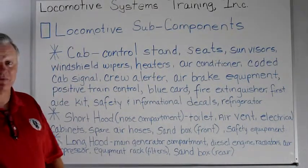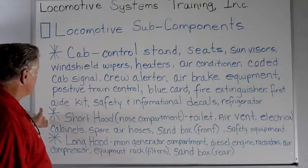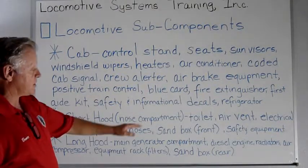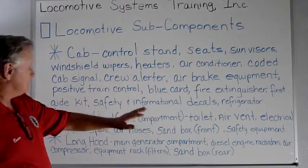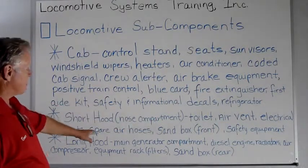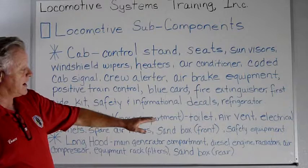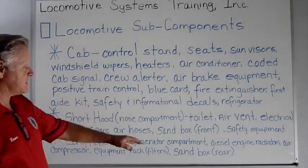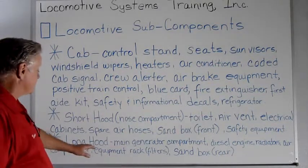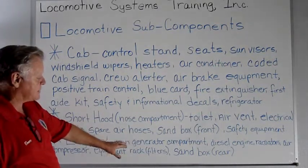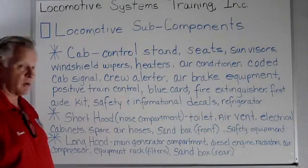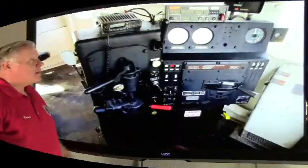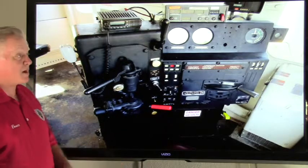We'll also cover the fire extinguisher, first aid kit, safety and informational decals, and the refrigerator — it's a pretty busy place. The next area is the short hood, or nose compartment: the toilet, air vent, electrical cabinets, spare air hoses, sandbox front, and safety equipment. In the long hood: the main generator compartment, diesel engine, radiators, air compressor, equipment rack with filters, and the rear sandbox.